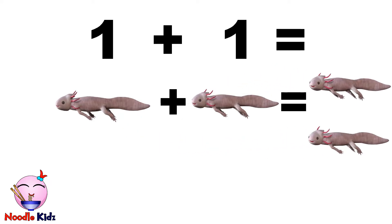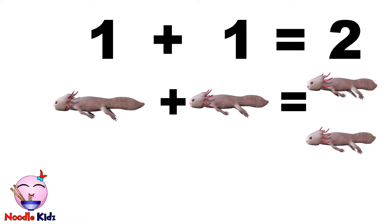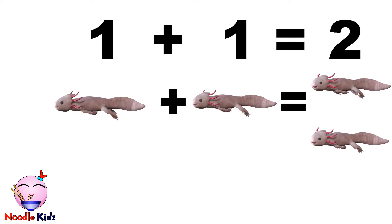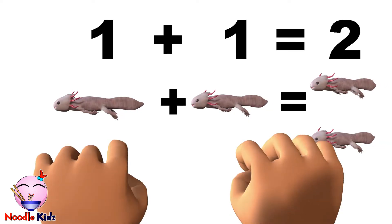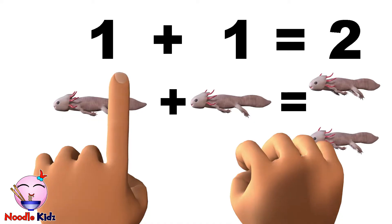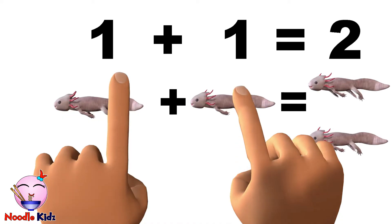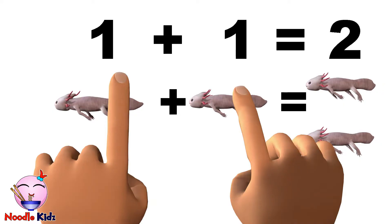Here we have one axolotl. And here comes another axolotl. Now we have two axolotls. In the equation, it is one plus one equals two. Let's use our fingers. One finger on this hand and another finger on this hand equals two fingers. The answer is two.